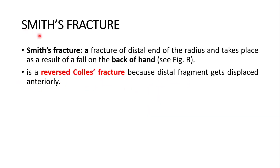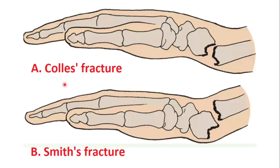Smith's fracture is a reversed Colles' fracture — a fracture of the distal end of the radius that takes place as a result of a fall on the back of the hand. In Colles' fracture there is a dinner fork deformity with dorsal displacement, while in Smith's fracture the distal end of the radius gets displaced ventrally or anteriorly — it is the reverse of the Colles' fracture.